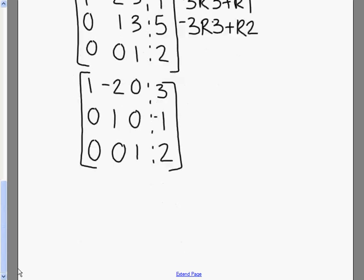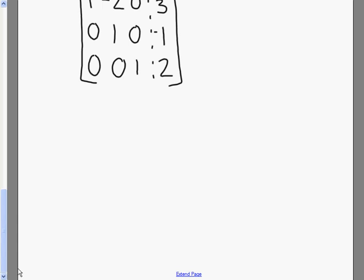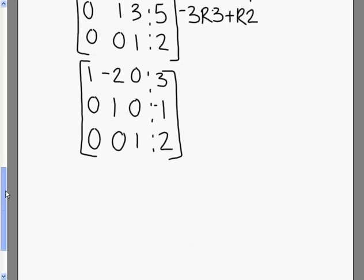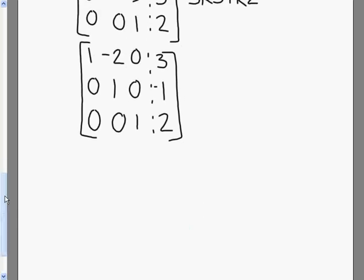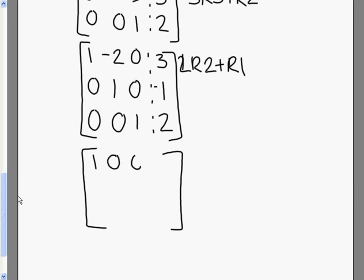So now we have one more spot to get rid of. We have to get rid of that negative 2 above our middle 1. So to do that, I'm going to go 2 row 2 plus row 1. And that's going to give us a new matrix now of 1, 0, 0, 1, 0, 1, 0, negative 1.